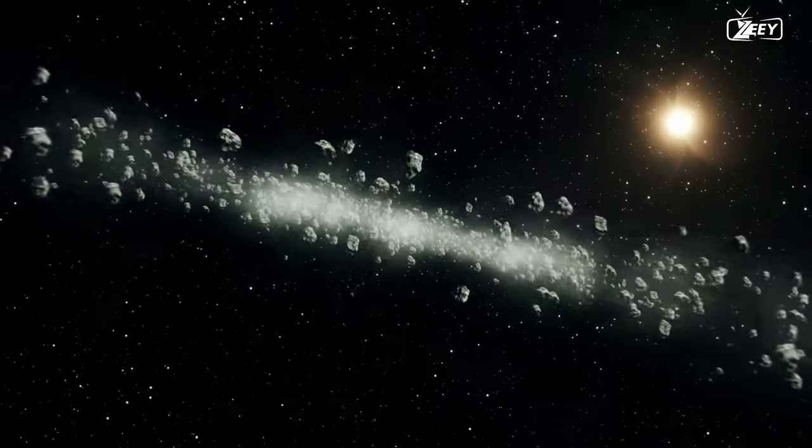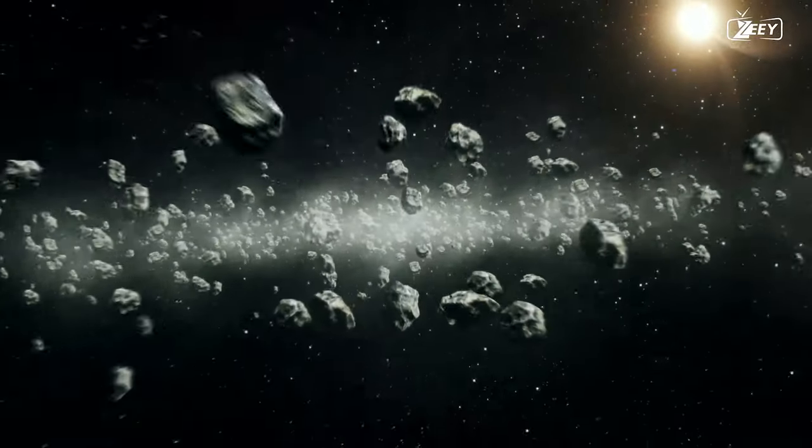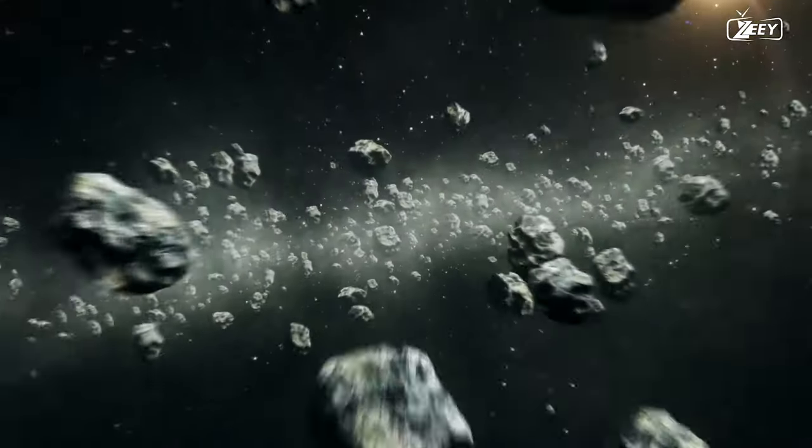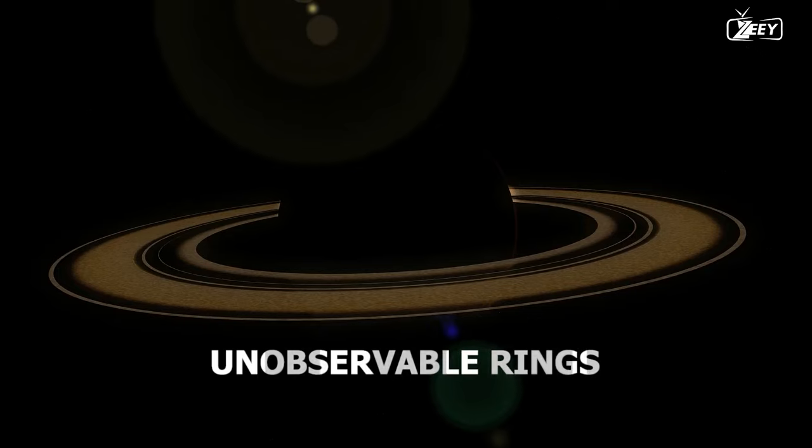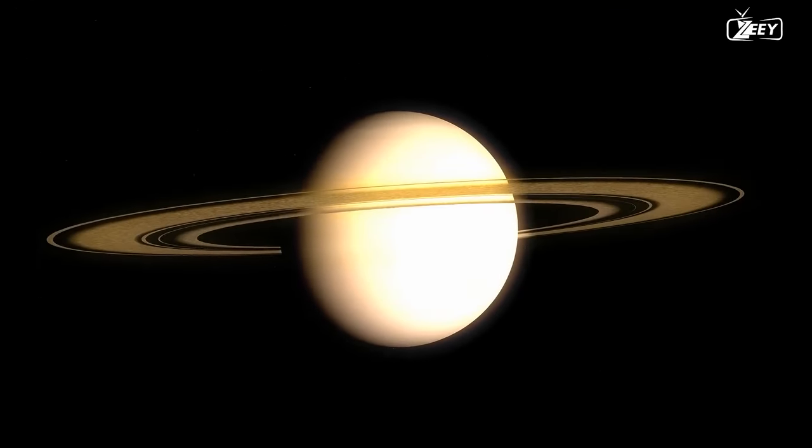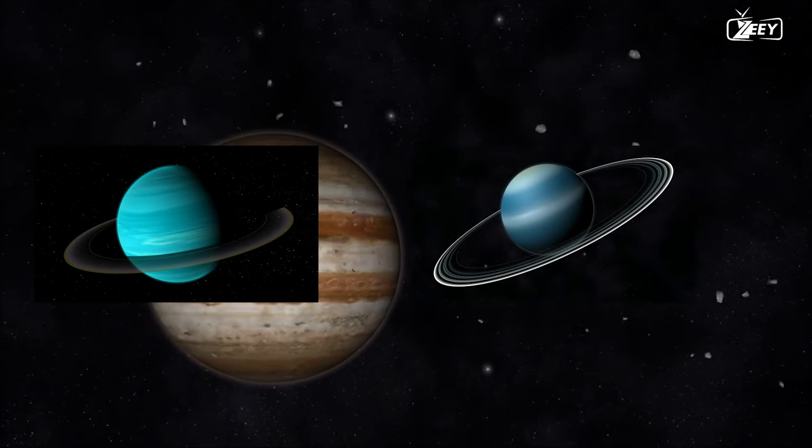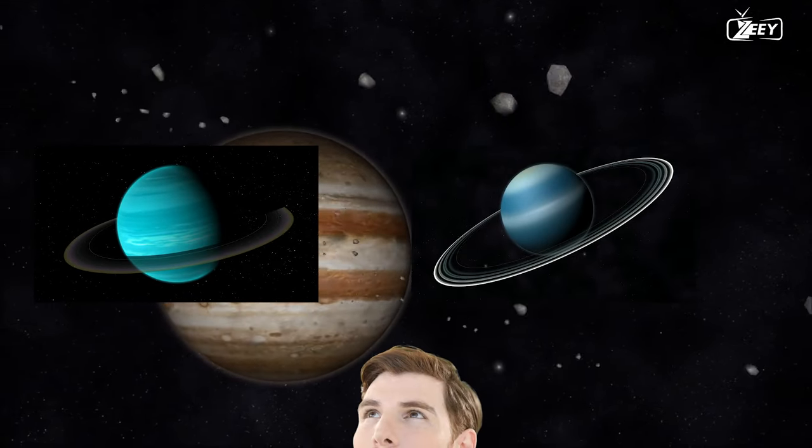Titan is believed to exert a substantial gravitational force on the ring particles, displacing them and producing a visible void devoid of rock and ice fragments. Although Saturn's asteroid rings are the most colorful in the solar system, Jupiter, Uranus, and Neptune all have rings. So why aren't these visible with the unaided eye?